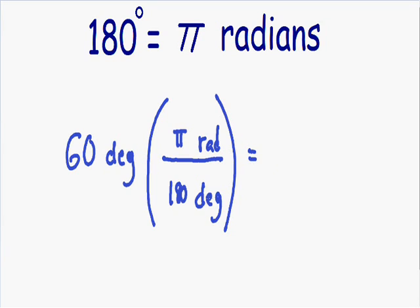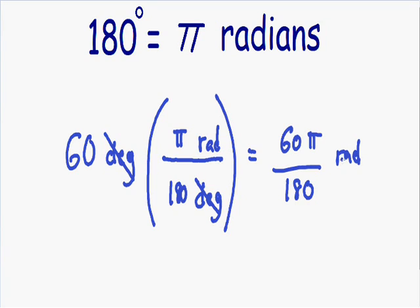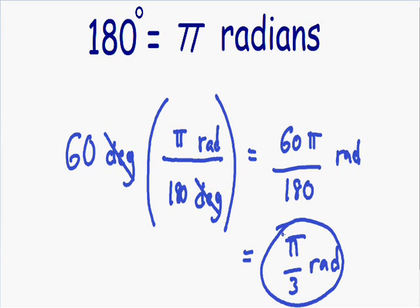Let's simplify this as much as possible. Notice how the degrees cancel out, and we're left with 60 times pi — I'll write that as 60 pi — and in the denominator we have 180, with radians in the numerator. So we've converted from degrees into radians: 60 degrees equals 60 pi over 180 radians. But this needs to be simplified further. We know that 60 over 180 equals one third, so this is actually pi over 3 radians. 60 degrees is equal to pi over 3 radians.